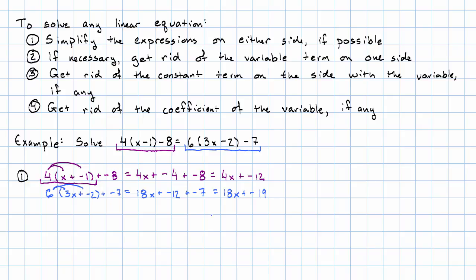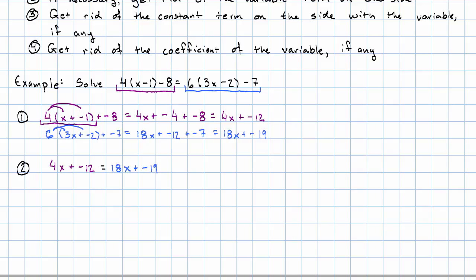Okay, putting those back together, my equation is 4x plus negative 12 equals 18x plus negative 19. And now I'm ready for step 2 — I need to get rid of the variable term on one side. I'm going to choose to get rid of the variable term on the left because that's going to give me positive numbers for my coefficients. So I want negative 4x on the left and negative 4x on the right.